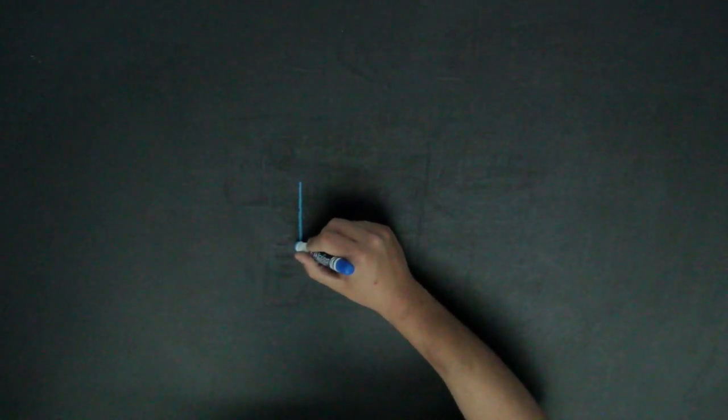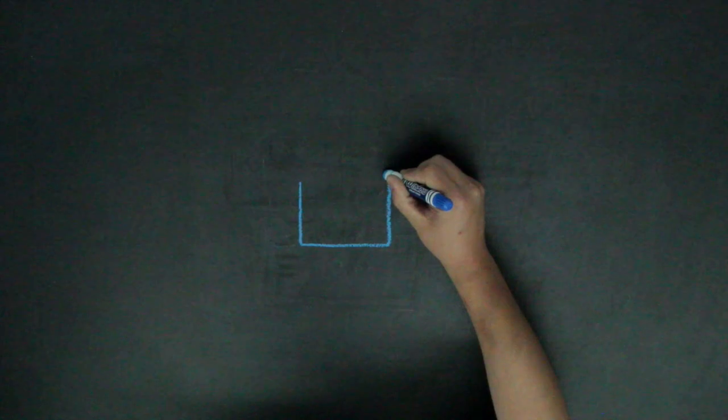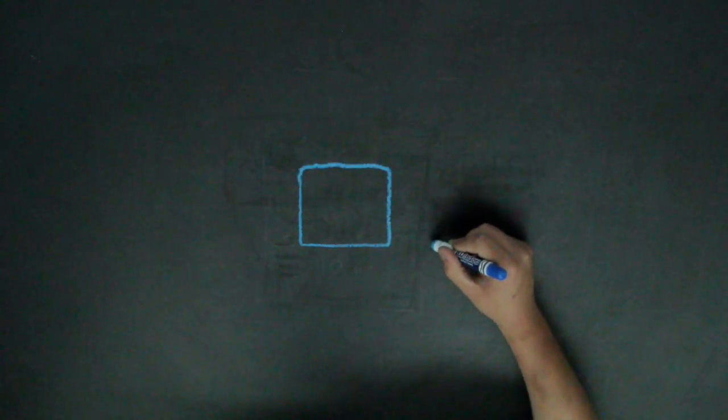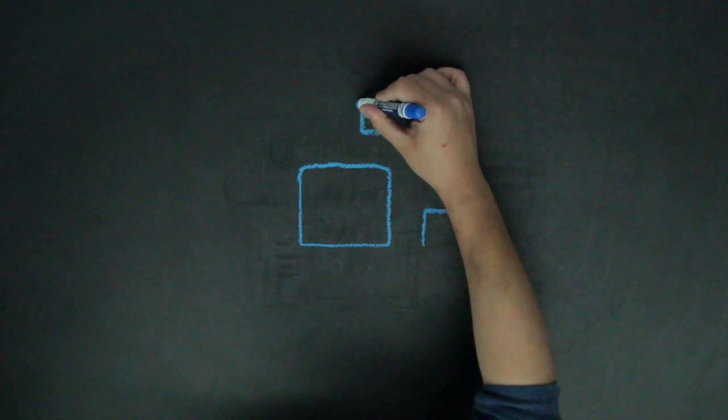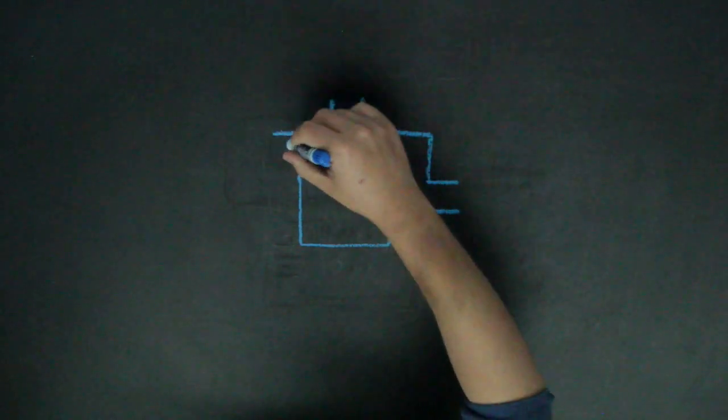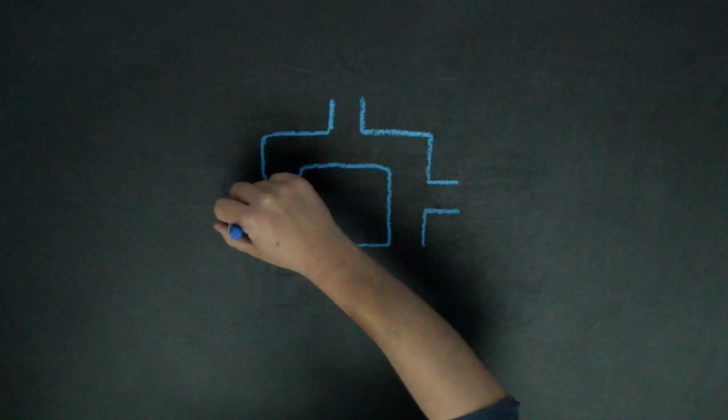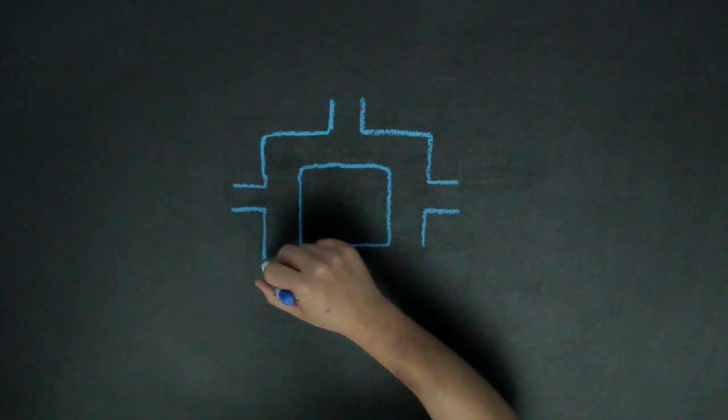Next, students will tape together four pieces of graph paper to represent the space in which their community will be located. Students can then arrange and rearrange their scaled, cut-out structures until they have a setup that they like. Group members should be able to discuss and justify their placement choices.